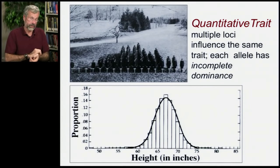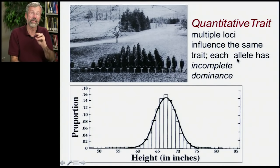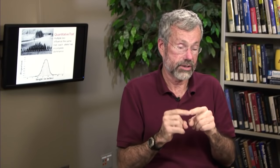Quantitative traits are where multiple different loci influence the same trait. With a quantitative trait, each allele shows incomplete dominance — so already this is going to be like snapdragons rather than peapods. The heterozygote is somewhere in the middle between the two homozygotes. We're going to have multiple loci that all contribute to some trait. A well-known quantitative trait is height.